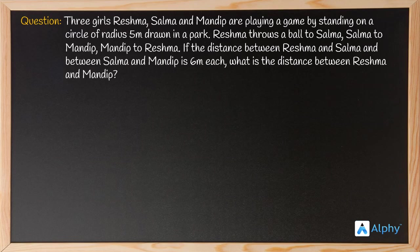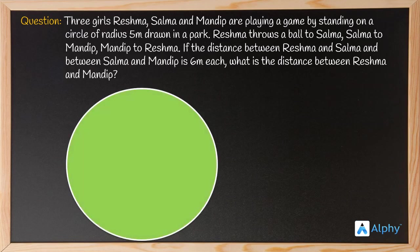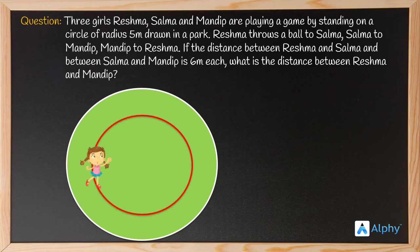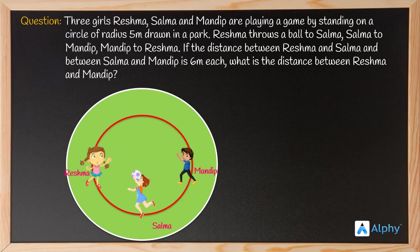We need to find the distance between Reshma and Mandeep. This is an application-based question where we use our knowledge of circles. The three girls are standing on a circle in the park. Reshma throws the ball to Salma, Salma throws it to Mandeep, and Mandeep throws it back to Reshma.